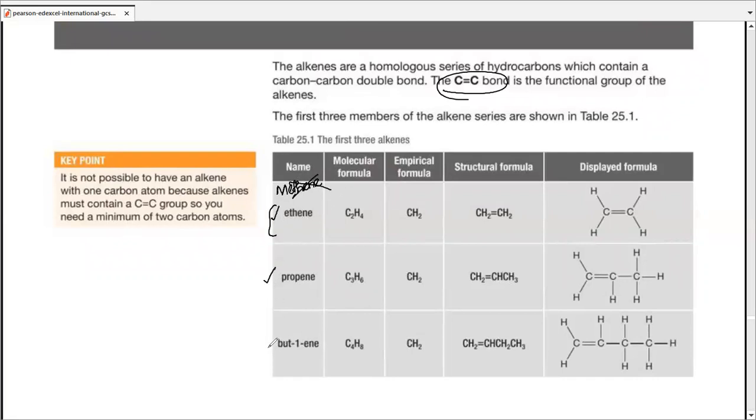Then propene. Then in case of butene, there is but-1-ene and there can be another isomer, which is but-2-ene, because the double bond can be situated at the first carbon atom or it can be situated at the second carbon atom. These two are actually isomers of one another, where the functional group is either at the corner or terminal carbon, or maybe it's in with the center carbon.